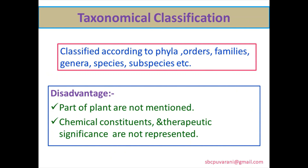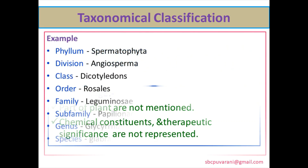In taxonomical classification, the drugs are classified according to phylum, order, families, genera, species, and subspecies. The major disadvantage of this classification is that the part of the plant, chemical constituents, and therapeutic efficacy are not mentioned.